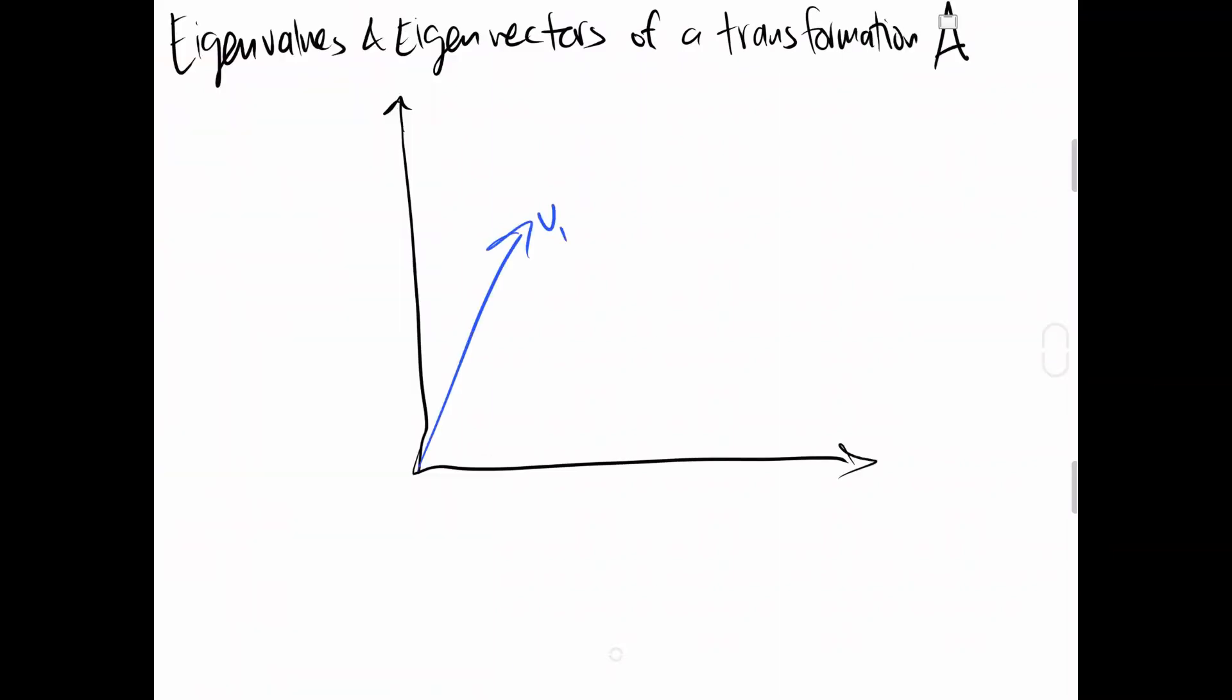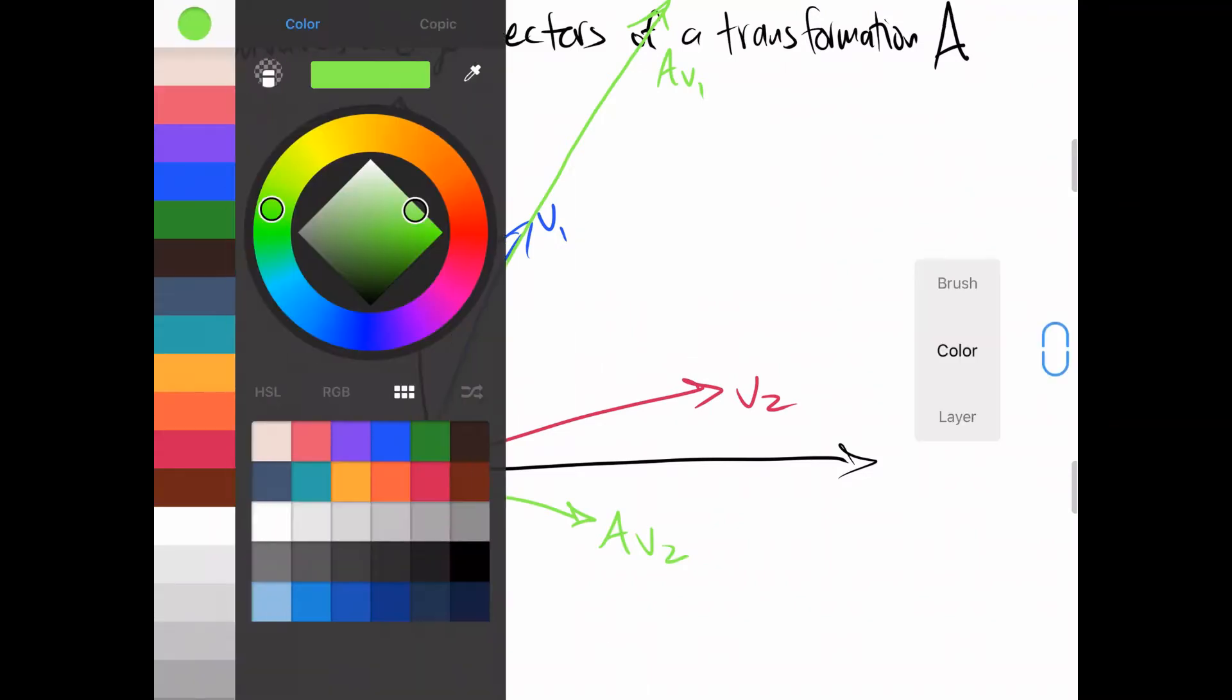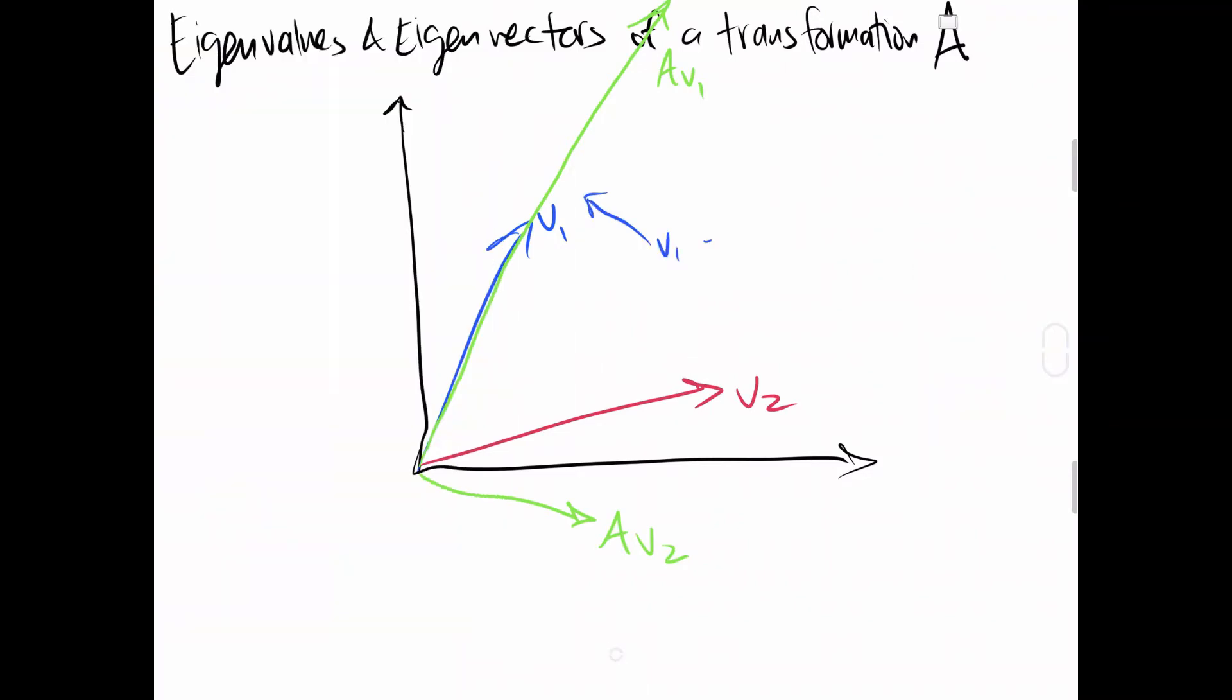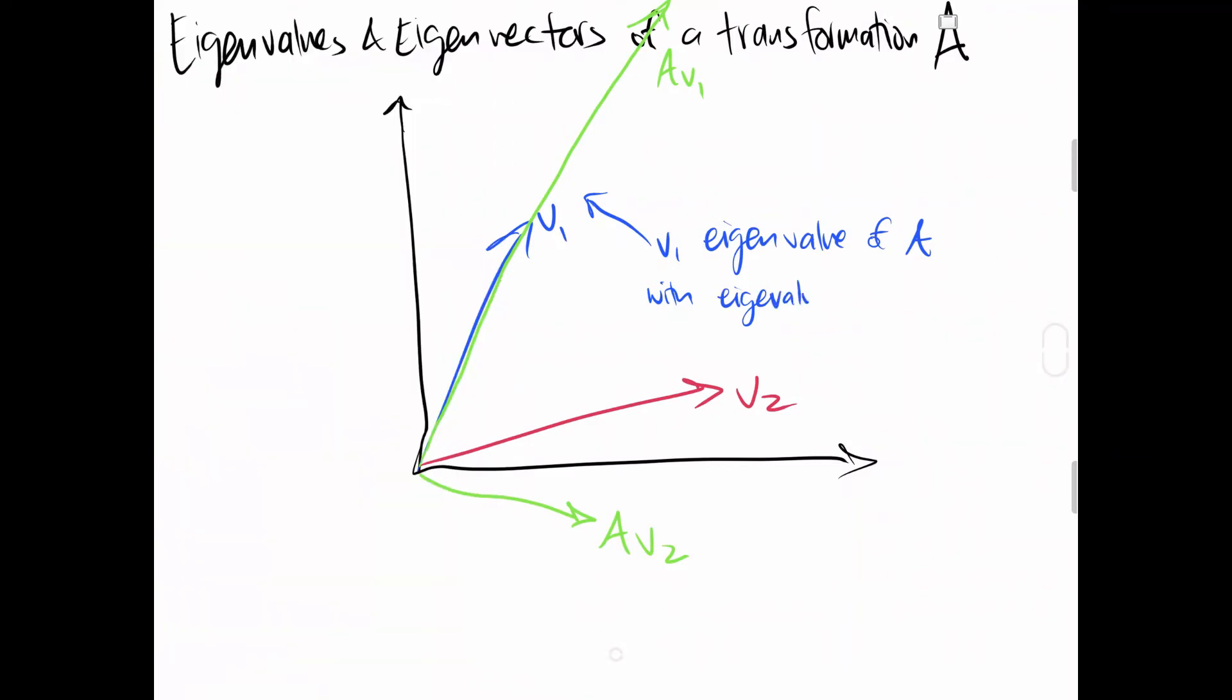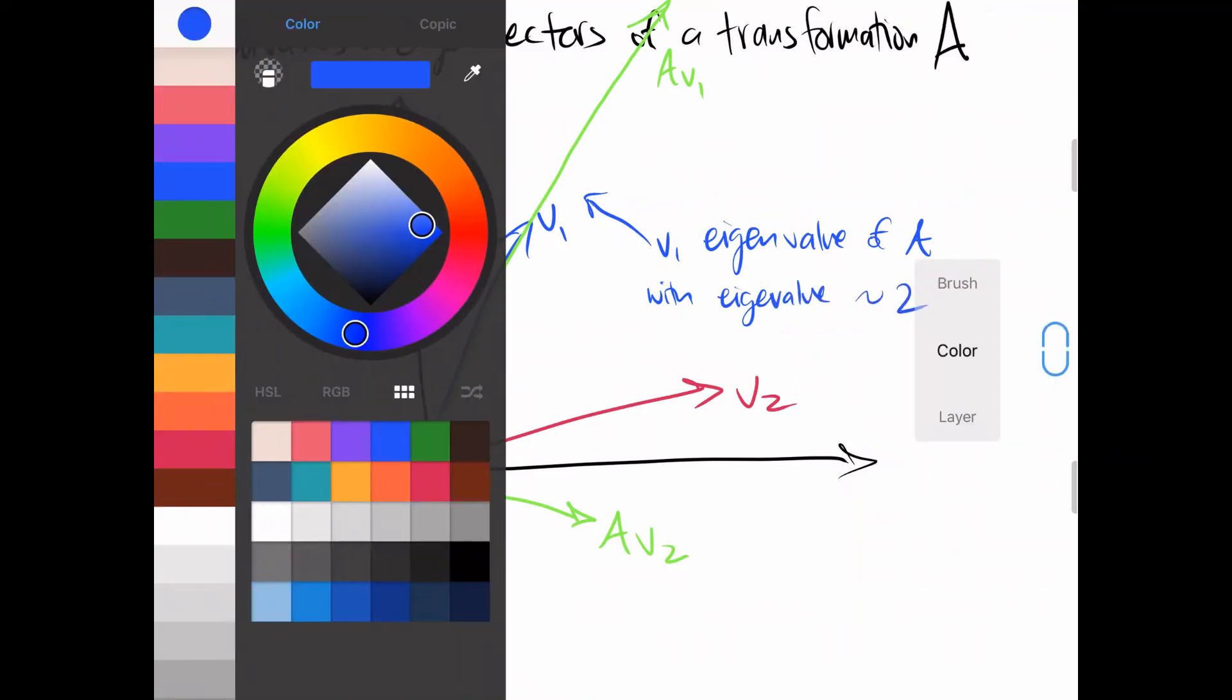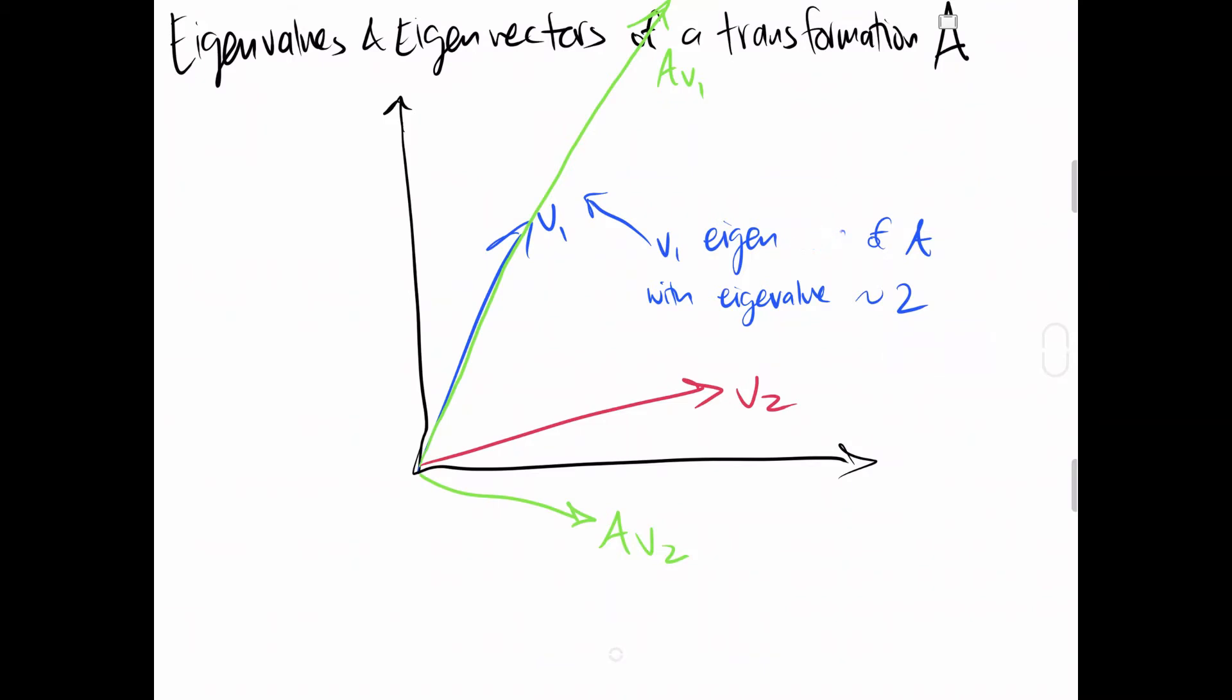Eigenvalues and eigenvectors of a transformation A. Here is a brief recap of what eigenvectors and eigenvalues are. Eigenvectors are vectors which remain on the same span after the transformation is applied. And eigenvalues are the factor by which they are stretched or squished. Looking at the diagram, vector 1 is an eigenvector. This is because after applying transformation A to vector 1, AV1 remains on the same span as vector 1.